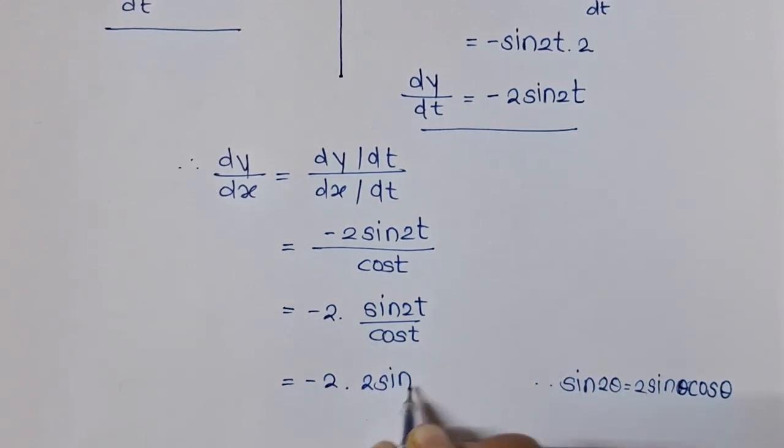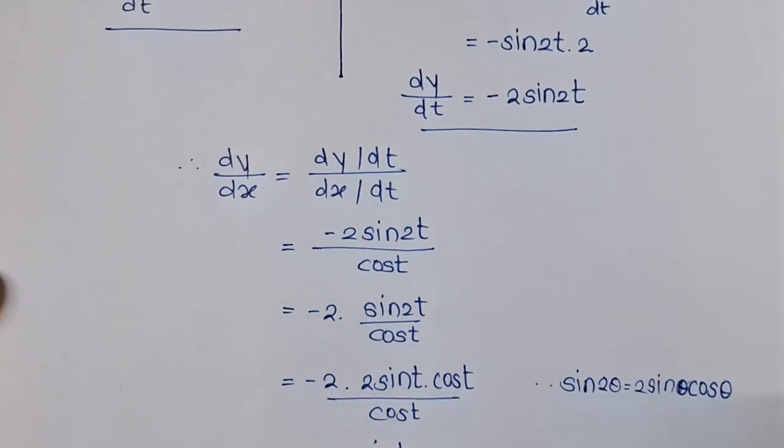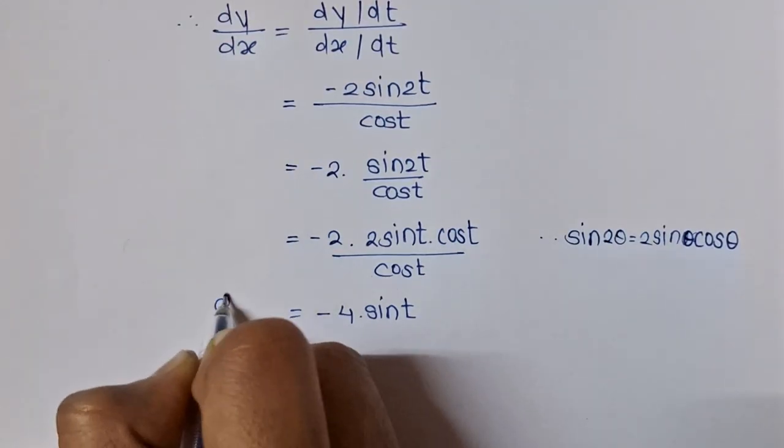And we will have minus 4 sin t, as cos t and cos t will get cancelled. So the final value of dy/dx is equal to minus 4 sin t.